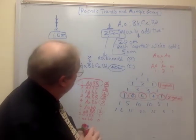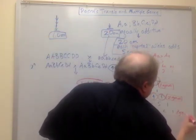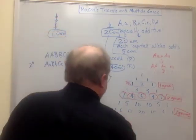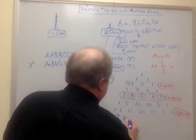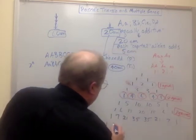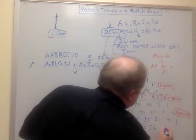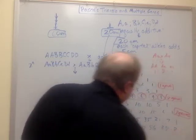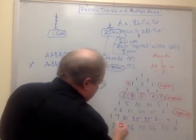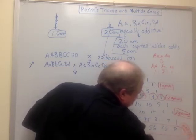Since we have four genes, we need to go a little further. The next row represents three genes, so we have to extend Pascal's Triangle more. Adding two more rows gives us 1-7-21-35-35-21-7-1, and then 1-8-28-56-70-56-28-8-1.